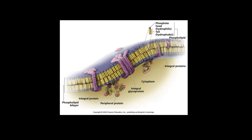A good way to remember who can cross the cell membrane is to remember the phrase "like interacts with like." So if you're a hydrophobic molecule, like a hydrocarbon, carbon dioxide, or oxygen, you can easily cross the cell membrane. Because you're hydrophobic and you're like the hydrophobic core of the membrane, you can easily cross that membrane.